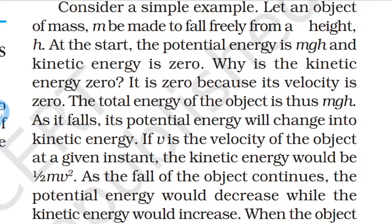Now as it falls, its potential energy will change into kinetic energy. If v is the velocity of the object, the kinetic energy would be one-half mv squared. As the fall continues, the potential energy decreases while kinetic energy increases. When the object is about to reach the ground, h equals zero,